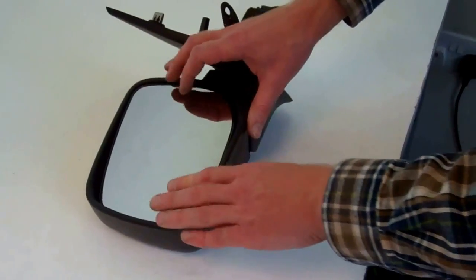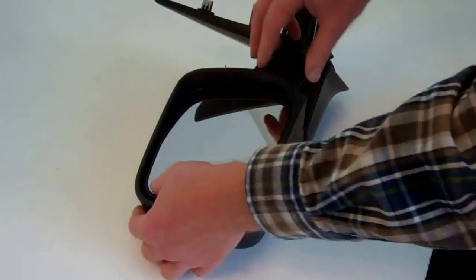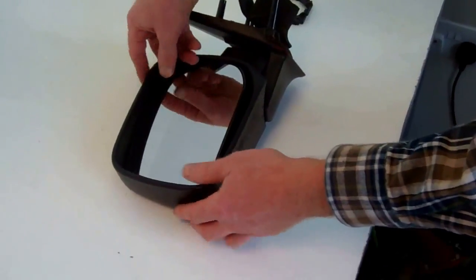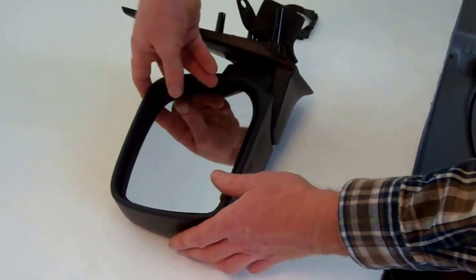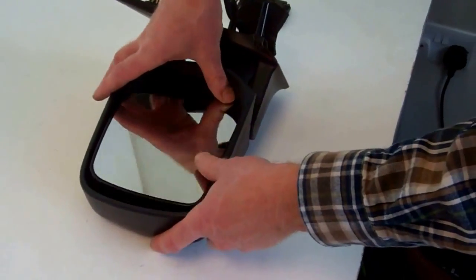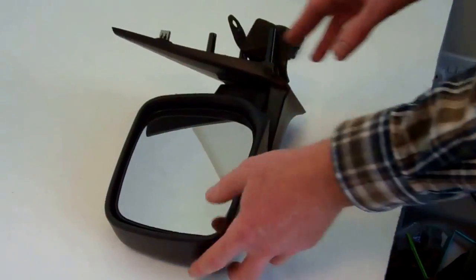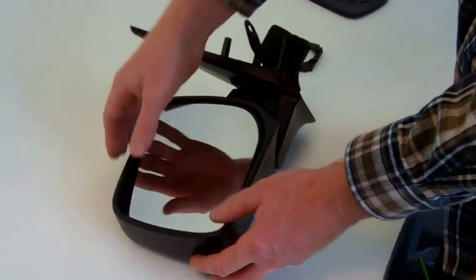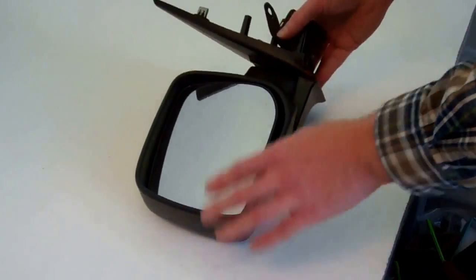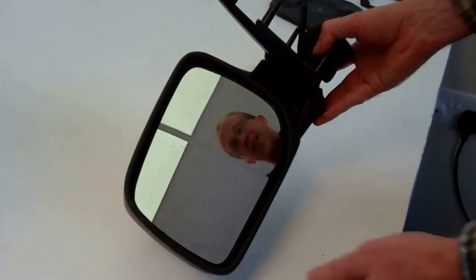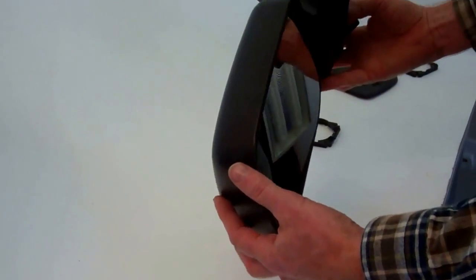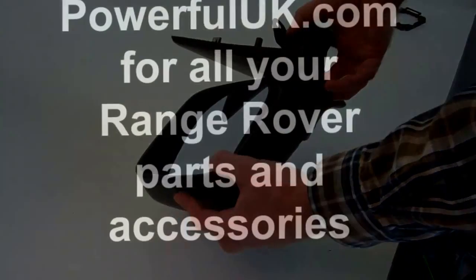So when you're happy that's clicked in, you want to give it a bit of a move about to check it is securely fitted. You might have to press it a couple of times to get it to click in. But yeah, when it's fitted you'll be able to move it about like so without any danger of it falling off. Obviously you can do it on the car. We've just done it in the studio to give you a bit of a better picture. So good luck with that.